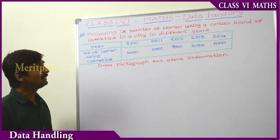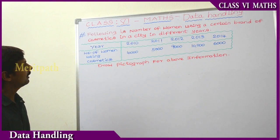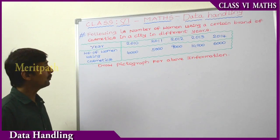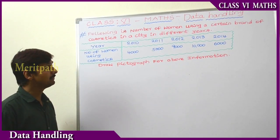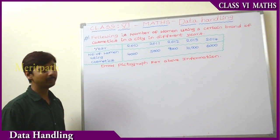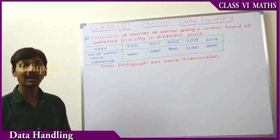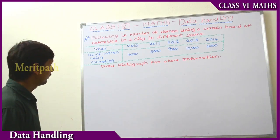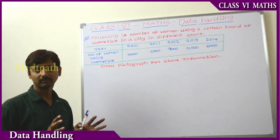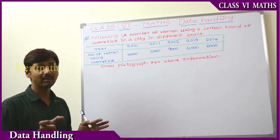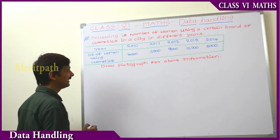The following is the number of women using a certain brand of cosmetics in a city in different years. In 2010, 4,000 women are using cosmetics. In 2011, 5,000 women. In 2012, 9,000 women. In 2013, 10,000. And in 2014, 6,000 women are using cosmetics. Let's draw a pictograph for this information, taking 1,000 women as one picture. So, 1,000 women equals one picture.